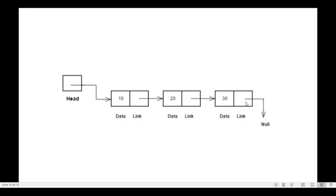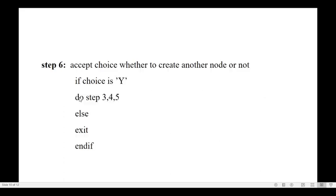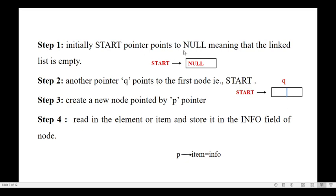The last node has the null part. To create this linked list, we first need a head or start pointer to store the address of the first node. When there is no node yet, the head or start pointer will be null, indicating that the linked list is empty. When the start pointer points to null, it means no node is pointed to — the linked list is empty.